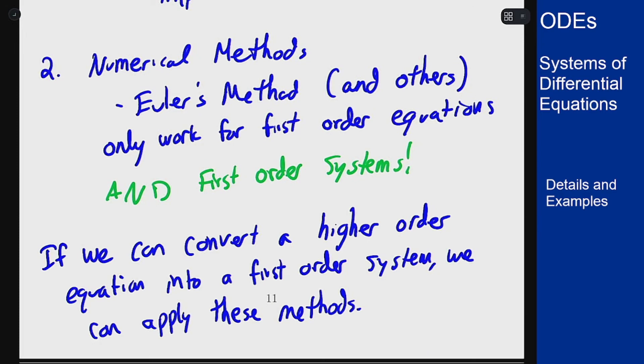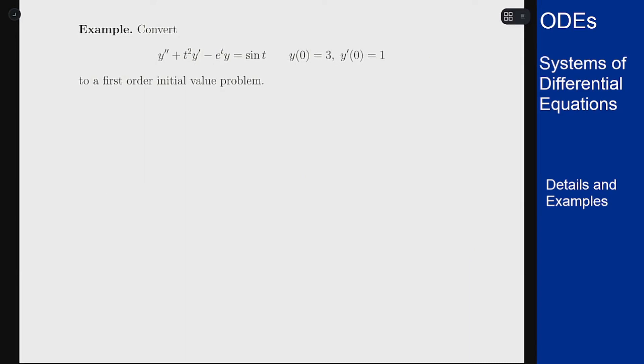And thankfully, there's a pretty standard approach for converting a higher-order equation into a first-order system, which we'll see via this example here. We have y double prime plus t squared y prime minus e to the t y equals sine of t, y of 0 equals 3, y prime of 0 equals 1. We want to convert this to a first-order system initial value problem.